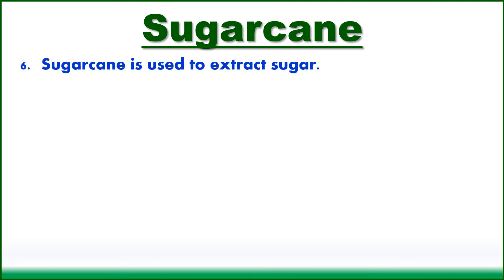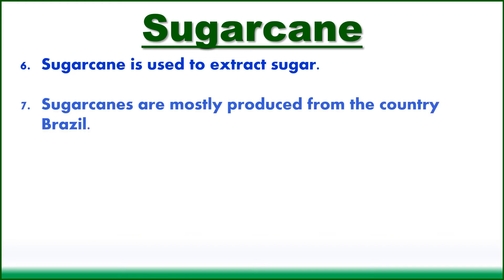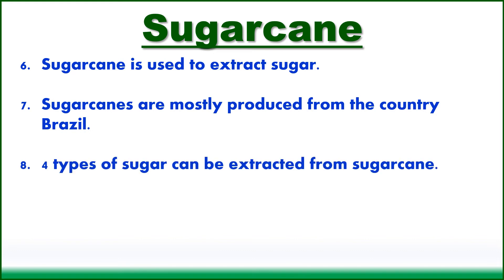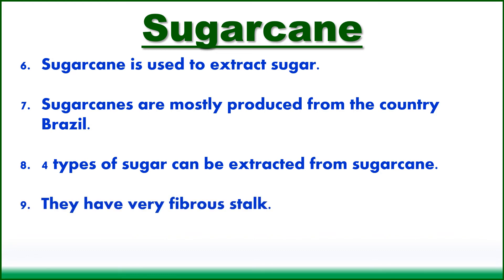Sugarcane is used to extract sugar. Sugarcane is mostly produced in the country Brazil. Four types of sugars can be extracted from sugarcane. Sugarcane has very fibrous stuff and is very crispy.